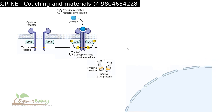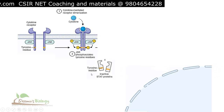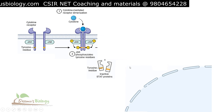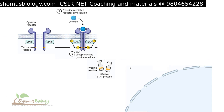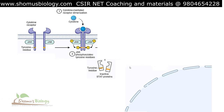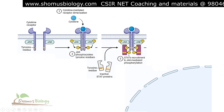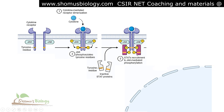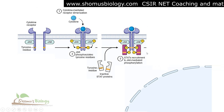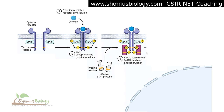STAT proteins, which are present in the cytosol and also carry a tyrosine residue, come and bind to the phosphorylated tyrosine residue at the cytosolic site of the cytokine receptor. Once this binding is complete, STAT recruitment is done.